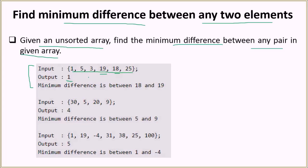Let's look at the second example where we have the numbers 35, 20, 5, and 9. Here the minimum difference will be 4 — that is the difference between 5 and 9, so 9 minus 5 is 4.